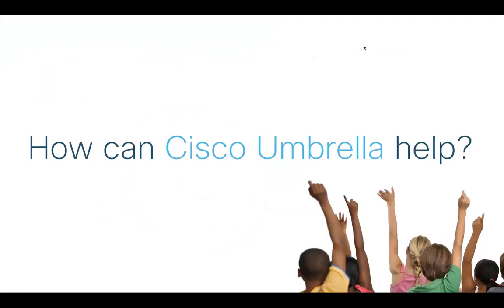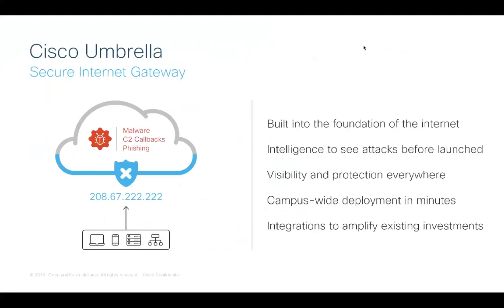Now that we've reviewed the three ways to secure your school district, let's look at how Cisco Umbrella can help. Umbrella is a secure internet gateway that provides the first line of defense against threats on the internet, anywhere your users go. By analyzing and learning from internet activity patterns, Umbrella automatically uncovers attacker infrastructure staged for current and emerging threats, and proactively blocks malicious requests before they reach your network or endpoint. With Umbrella, you can stop phishing and malware infections earlier, identify already infected devices faster, and prevent data exfiltration. Because Umbrella is built into the foundation of the internet and delivered from the cloud, it provides complete visibility into internet activity across locations and users, and it's one of the simplest security products to deploy and manage.